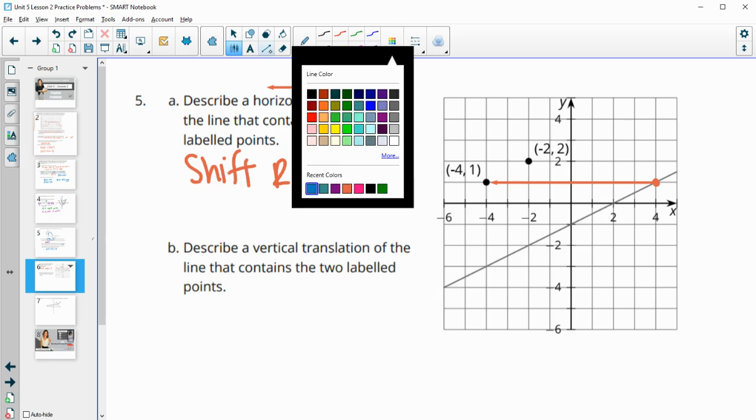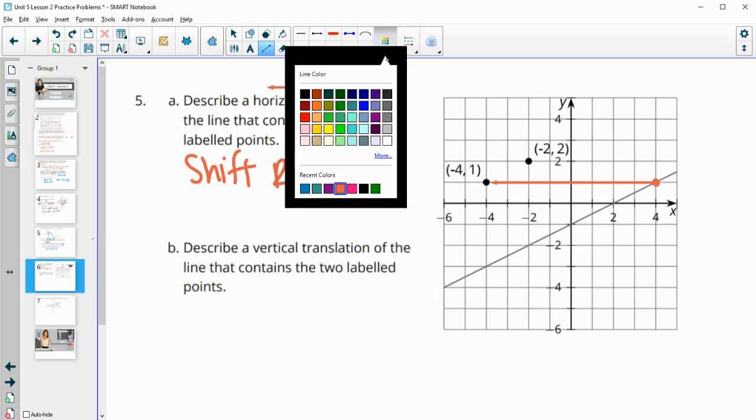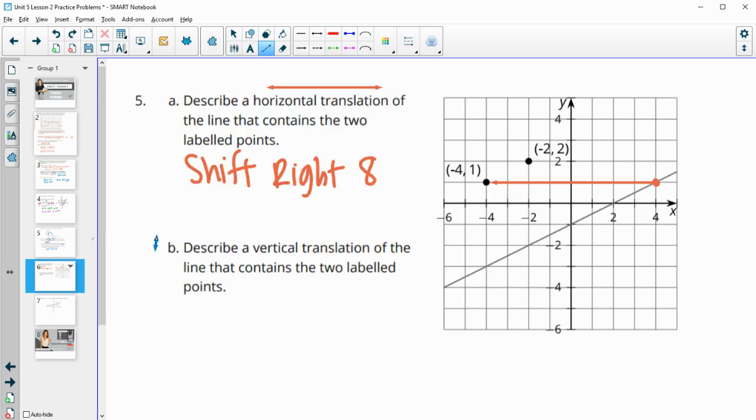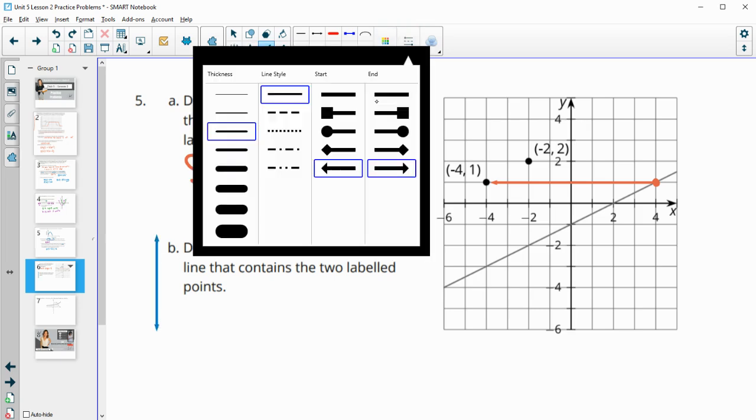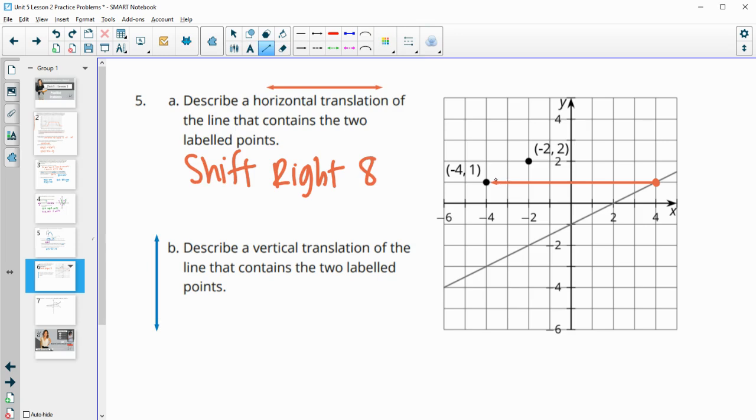Then this next one says a vertical translation. So now we just want to move it vertically. And remember that vertical is up and down. So now if we just want to move it up or down. So now we want to find the point vertically that we'll be able to move straight up to that. So I just went to the point, went down, found it here. And then draw straight up to that. And so this is going to be 1, 2, 3, 4. So a shift up 4 units.